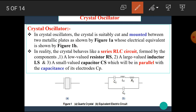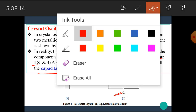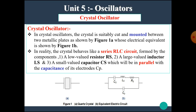In reality, the crystal behaves like a series RLC circuit formed by the components: a low-valued resistor Rs, a large-valued inductor Ls, and a small-valued capacitor Cs, which is in parallel with the capacitance of the electrodes, Cp. I hope you all understand the basic equivalent circuit of the quartz crystal.